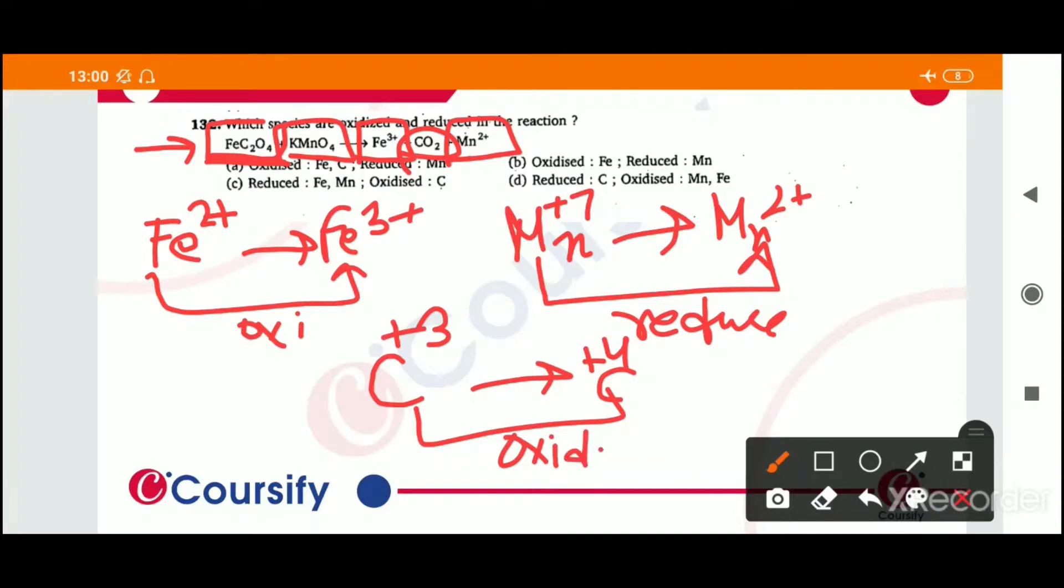So which elements oxidized? Iron and carbon. And which elements are reduced? Mn. Which elements are oxidized? Iron and carbon.